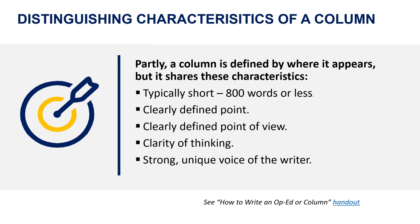One of the things I realized early on when I was teaching this course at a different university was the importance of giving students an idea of what a column is. Two weeks into the course, a student asked me to define what a column is — I realized that was something I should have done when the class first began. So I start every class now by giving some basic characteristics of a column: they're typically short, 800 words or less, they have a clearly defined point, clearly defined point of view, a clarity of thinking, and a strong, unique voice of the writer.